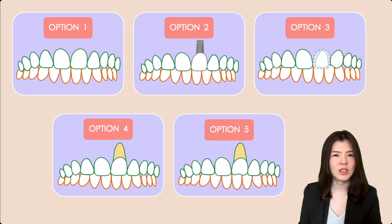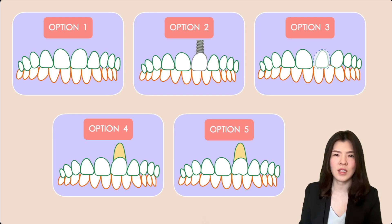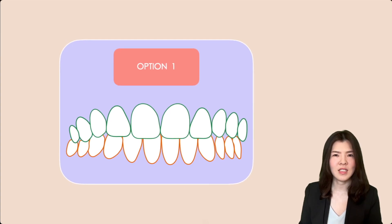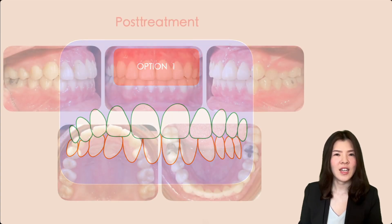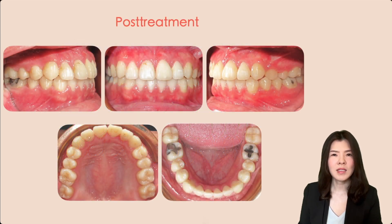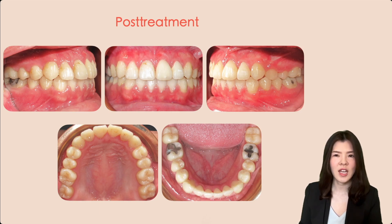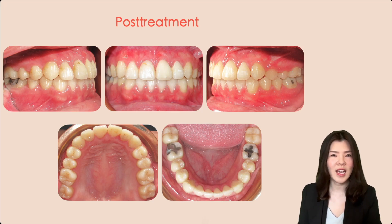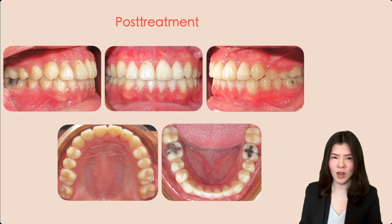All treatment options were discussed on the basis of risks and benefits, and option one was chosen. Here are the final results. The maxillary left central incisor was properly positioned in the dental arch and its vitality was maintained. The gingival margin and crown length were similar to the right side, providing an aesthetic result.